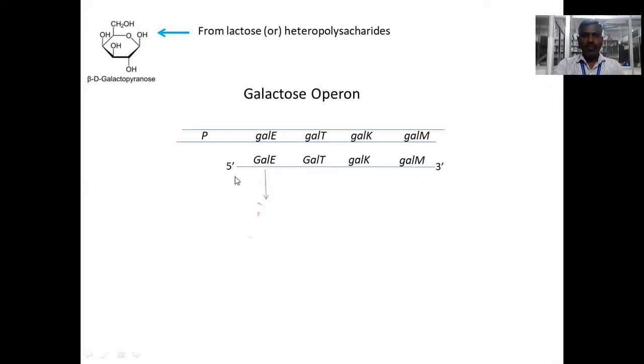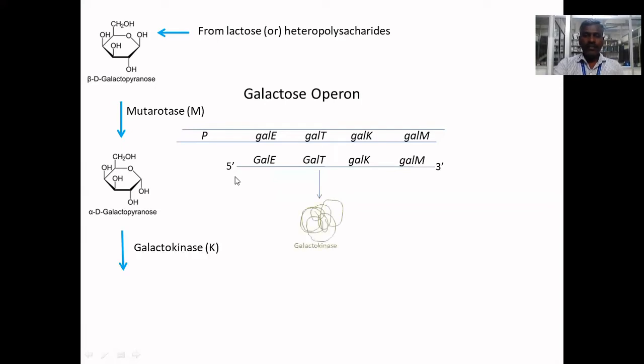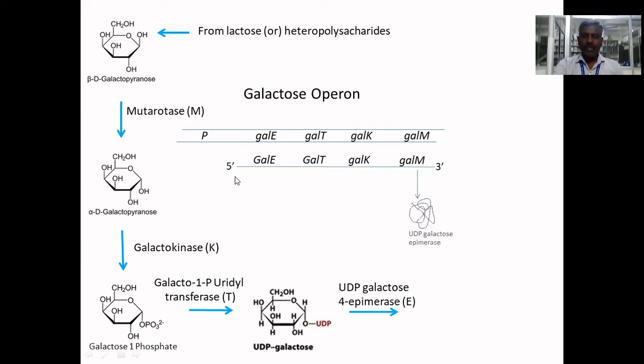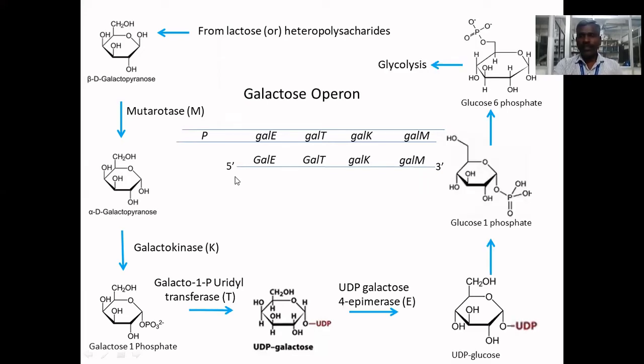Gene GalE codes for mutarotase which converts beta-D-galactopyranose into alpha-D-galactopyranose. GalT codes for galactose kinase which converts alpha-D-galactose into galactose 1-phosphate. GalK enzyme codes for galactose 1-phosphate uridyl transferase which converts galactose 1-phosphate into UDP-galactose. GalM gene codes for UDP-galactose epimerase which epimerizes UDP-galactose into UDP-glucose. This UDP-glucose is further converted into glucose 1-phosphate which again converts into glucose 6-phosphate and finally enters into glycolysis.